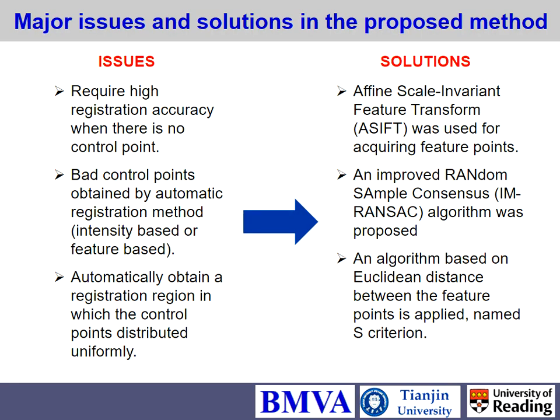However, there are no control points — we can't manually set them there. We can generate control points automatically, but the challenge is how to select good matching points to reconstruct the 3D surface of the moon, and also to automatically obtain a registration region where control points are distributed uniformly. These are the three main challenges we address.